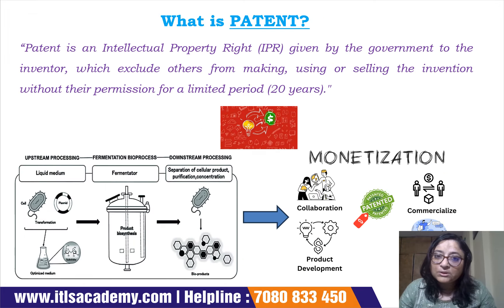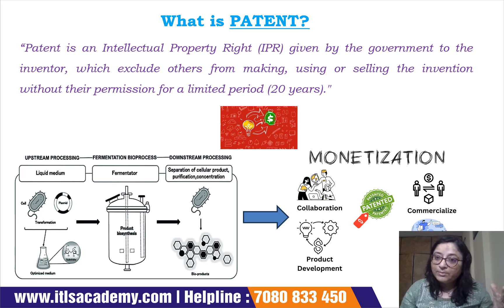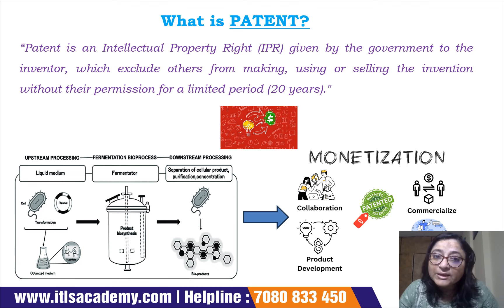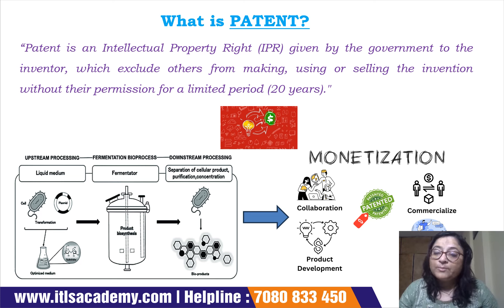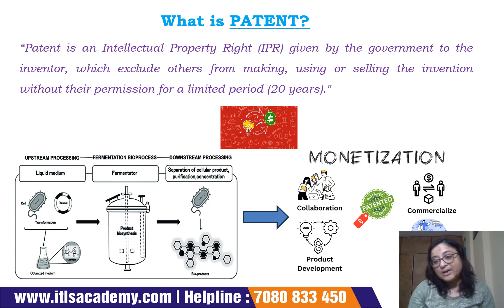First is patent. Patent is basically an idea about an invention. If any invention comes in your mind — like the bulb, which was the invention of Edison — that will basically come under a patent. Patent is an intellectual property right given by the government — the Indian government, if we are talking in the context of India — to the inventor, which excludes others from making, using, or selling the invention without the permission of that inventor.